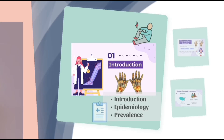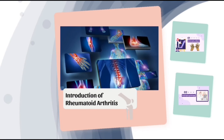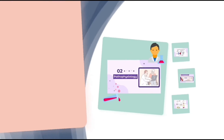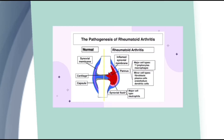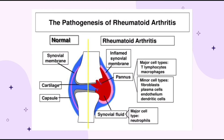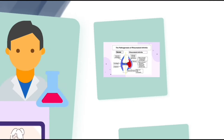After this introduction to rheumatoid arthritis, what is the main difference between a normal joint and a joint with rheumatoid arthritis? The main difference can be seen clearly in two things: the presence of pannus and also an inflamed synovial membrane.